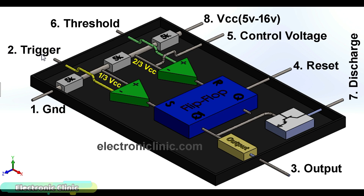The results of the comparison of the two comparators, which is in the form of 0 or 1, is given to the flip-flop. The output of the first comparator is connected with the R pin of the flip-flop, while the output of the second comparator is connected with the S pin. The output of the flip-flop is 1 when R equals 0 and S equals 1. The output of the flip-flop is 0 when R equals 1 and S equals 0.